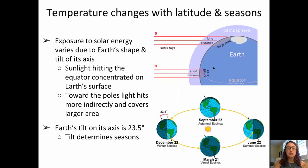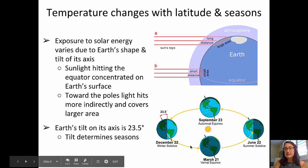Let's take a look at what happens with solar radiation in terms of changes in temperature with latitude and seasons. In the top diagram, the red lines indicate solar radiation hitting Earth's surface. When solar radiation hits at the equator, it makes a focused, concentrated, circular spot. However, solar radiation incident upon high latitudes spreads out over a larger area because of the angle — it's not focused and not concentrated. This, along with the fact that the Earth is tilted about 23.5 degrees on its axis, gives us seasons.